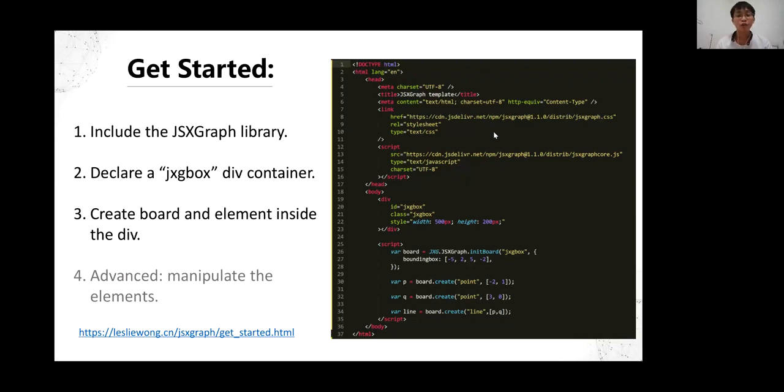First, we create a normal HTML file and include the JSXGraph library. As you can see on the right side, we get CSS and JS files from JSDelivr. Then we declare a jxgbox div inside the body tag to contain elements. Then we do our JavaScript stuff.